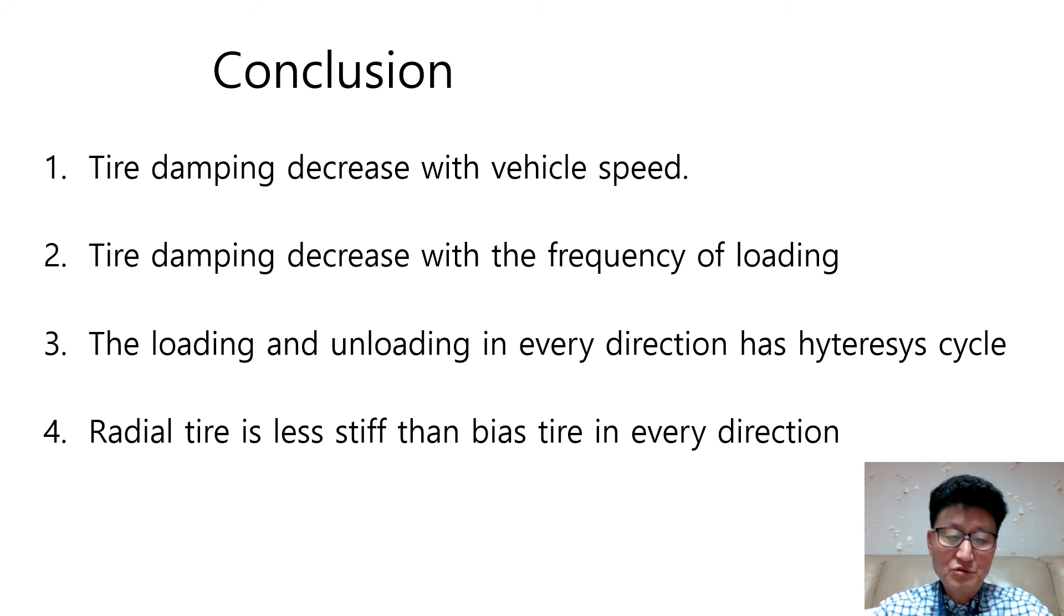Now we have a conclusion in this video. Tire damping decreases with vehicle speed. Tire damping decreases with the frequency of loading. The loading and unloading in every direction has hysteresis cycle. Radial tire is less steep than bias tire in every direction.